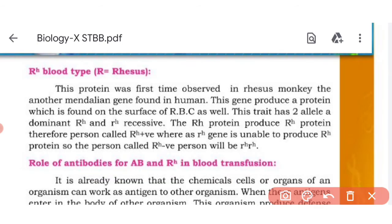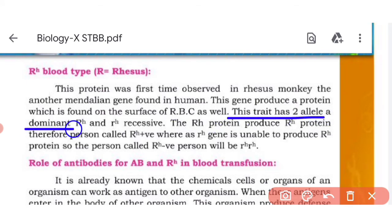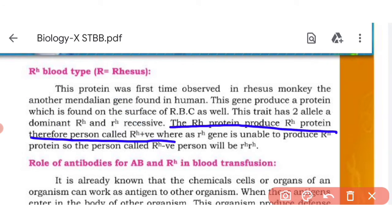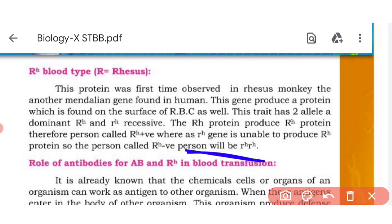Now the Rh blood type. This protein was first observed in rhesus monkeys, hence the Rh factor. The positive and negative blood groups refer to this. Rh factor is a protein present on the RBC surface. It has two alleles — one dominant and one recessive. If the Rh protein is present on a person's RBC surface, the person is Rh positive. If the Rh gene is unable to produce Rh protein, there is no Rh factor on the RBC surface, and the person is Rh negative.